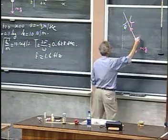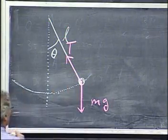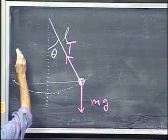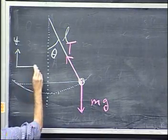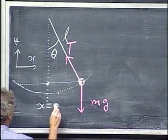The thing is going to arc around like this and oscillate. I call this the y-direction and this the x-direction, and here x equals zero.